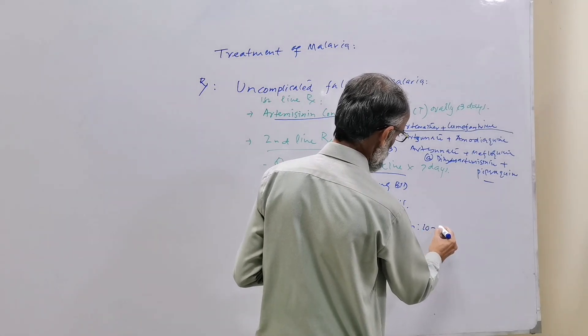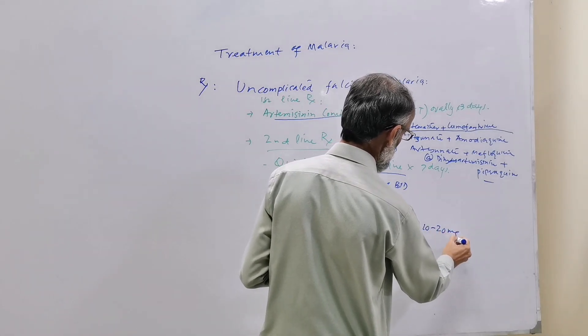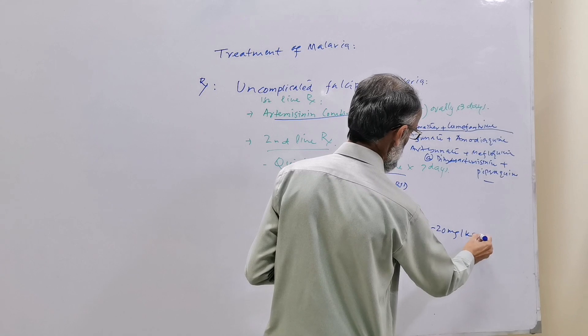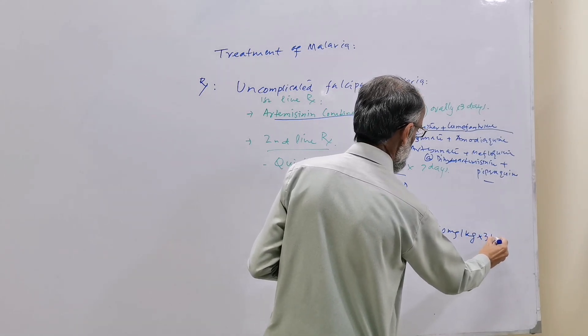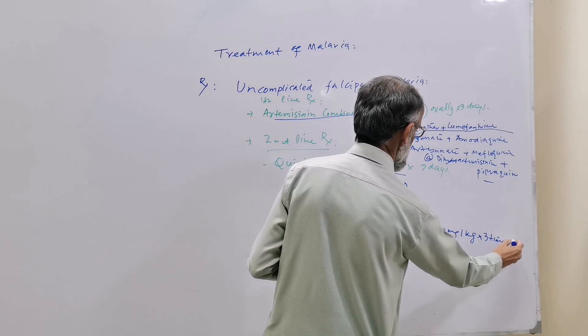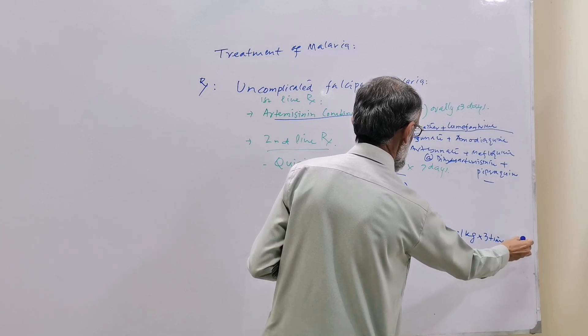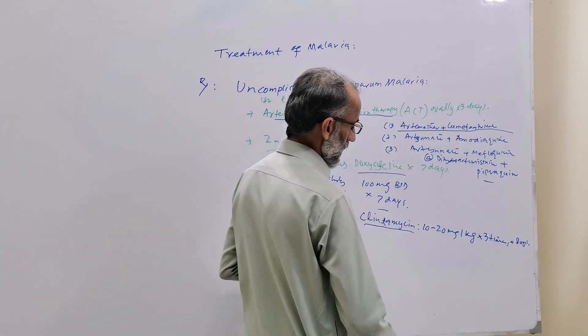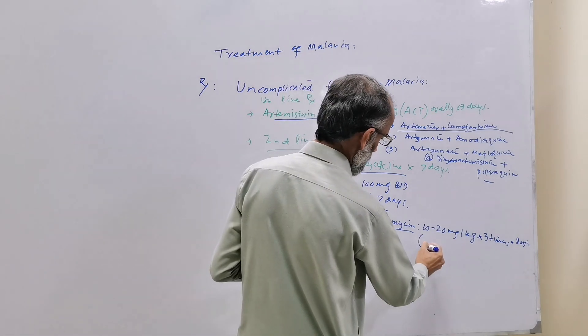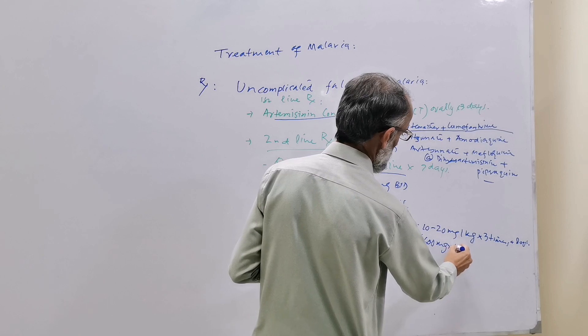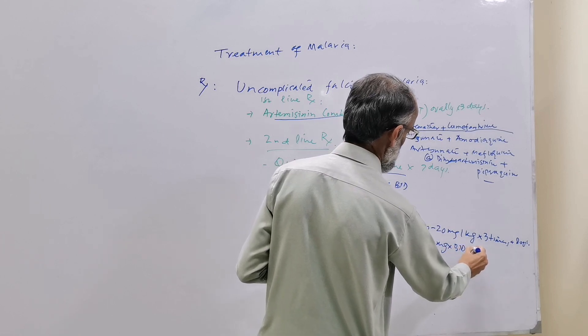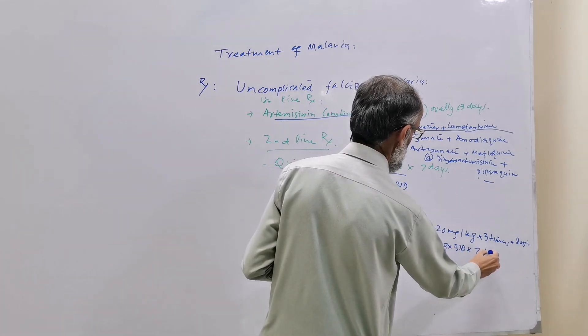Clindamycin is given 10 to 20 mg per kg three times a day, and commonly it is given 600 milligram BD for seven days.